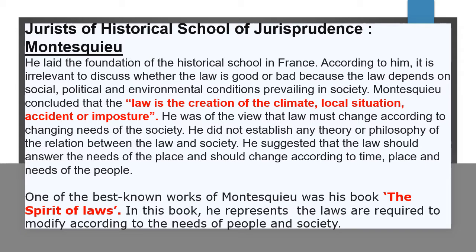अब हम देखते हैं कि आखिर वो कौन से jurist थे जिन्होंने law के evolution में help दी। सबसे पहला नाम जुड़ता है Montesquieu का, जिनको हम कहते हैं founder of the historical school of jurisprudence। इनकी book थी 'The Spirit of Laws'। इस book में इन्होंने historical school का base mention किया था। ये बोलते हैं कि जो law है वो modify होता है और develop होता है with the changing needs of people and society।